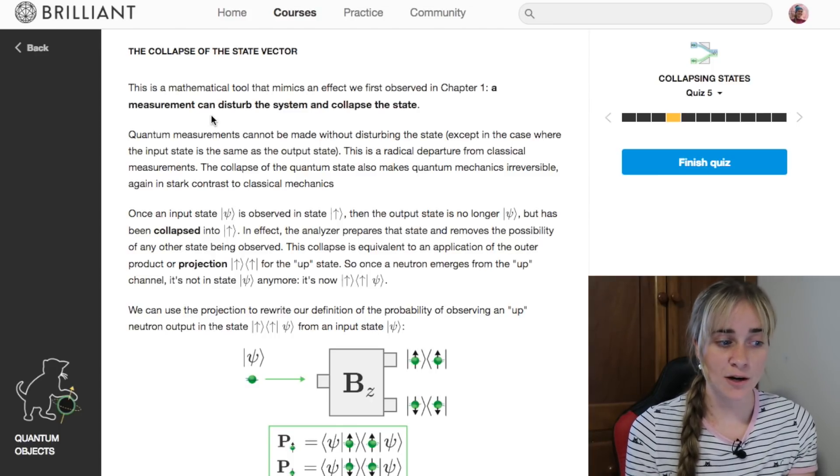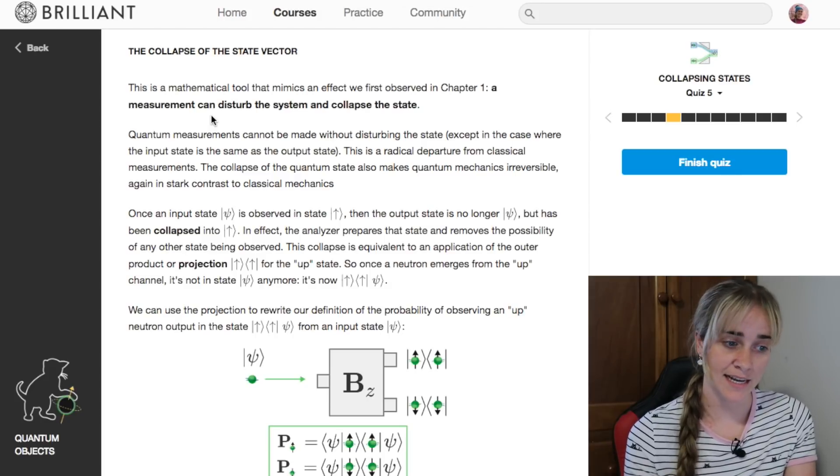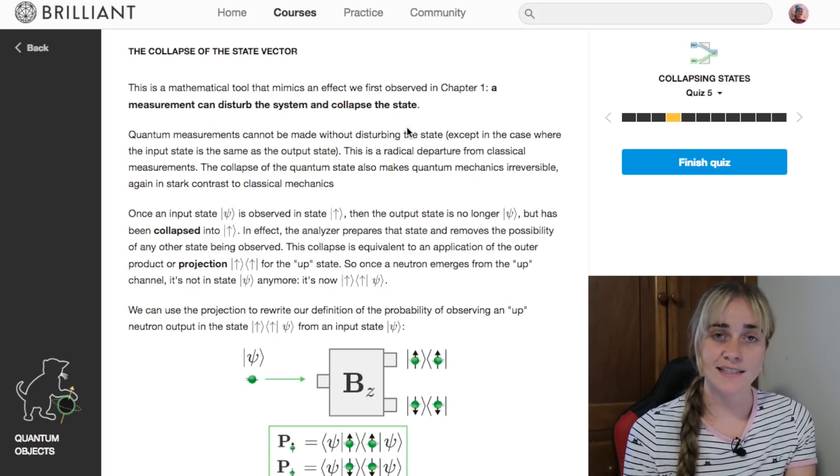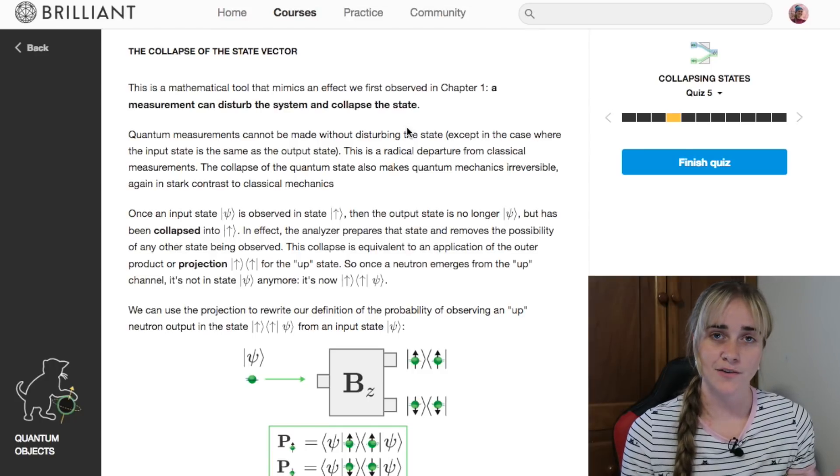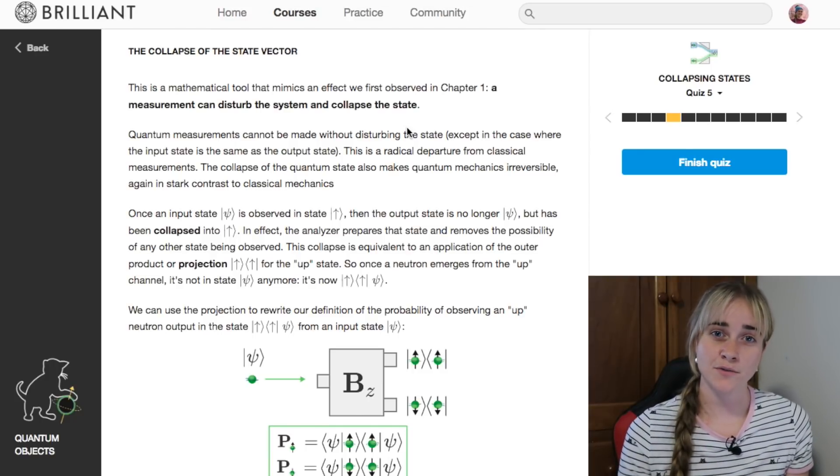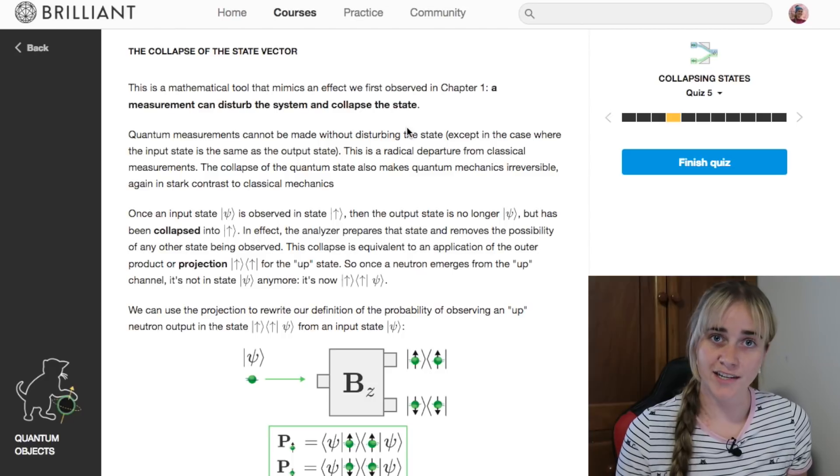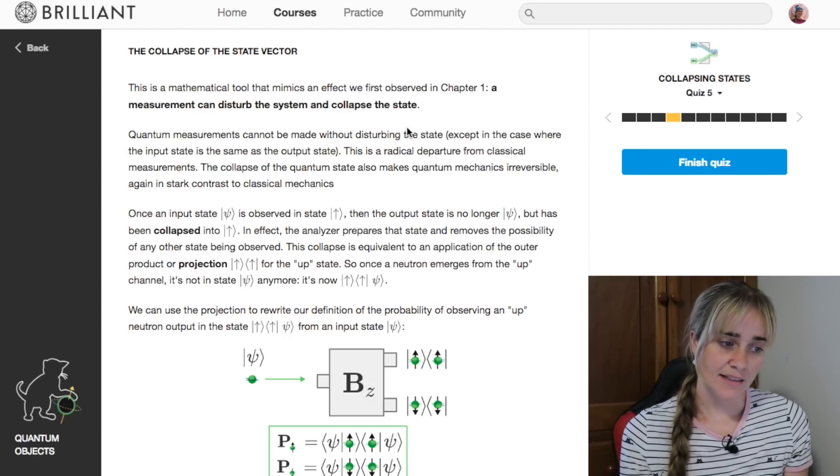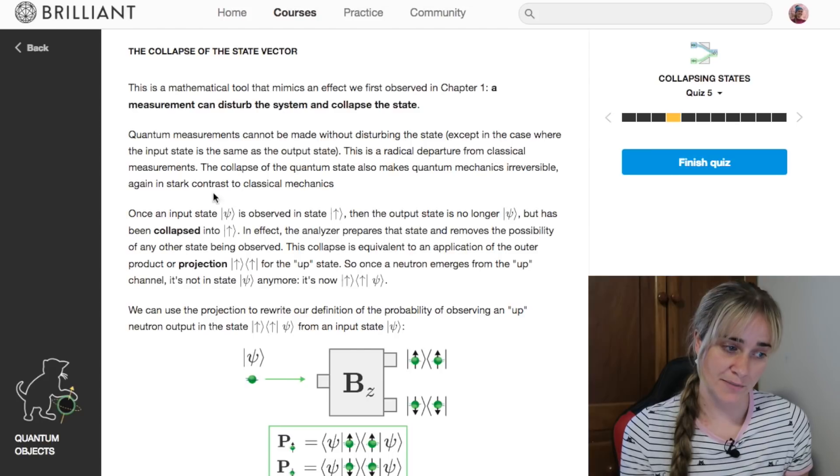Quantum measurements cannot be made without disturbing the state, except in the case where an input state is the same as the output state. That's like if you're measuring something twice and you already know what it is, you're not going to change it there.